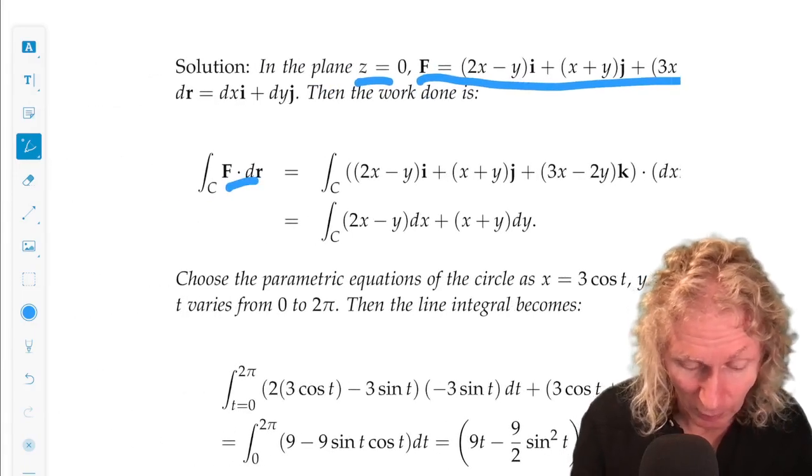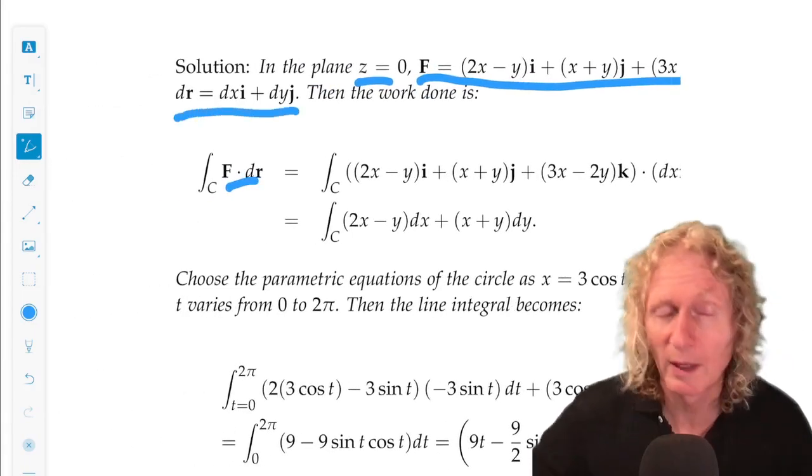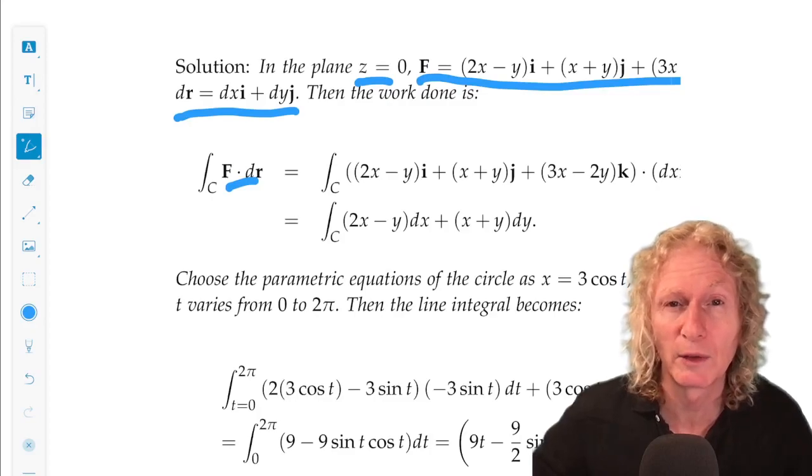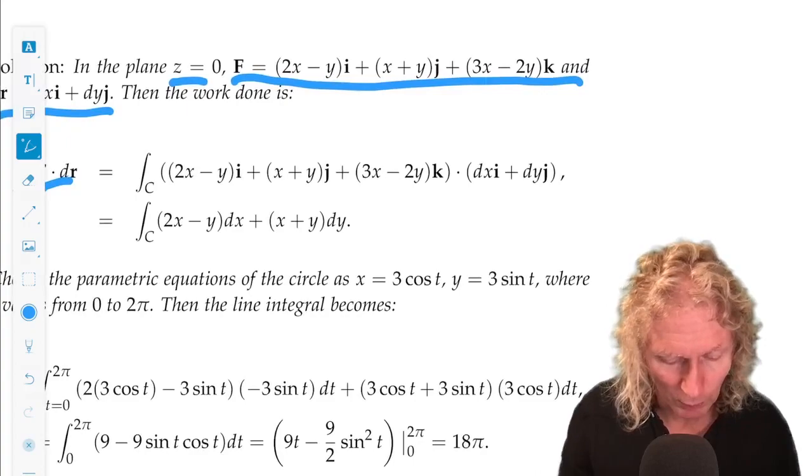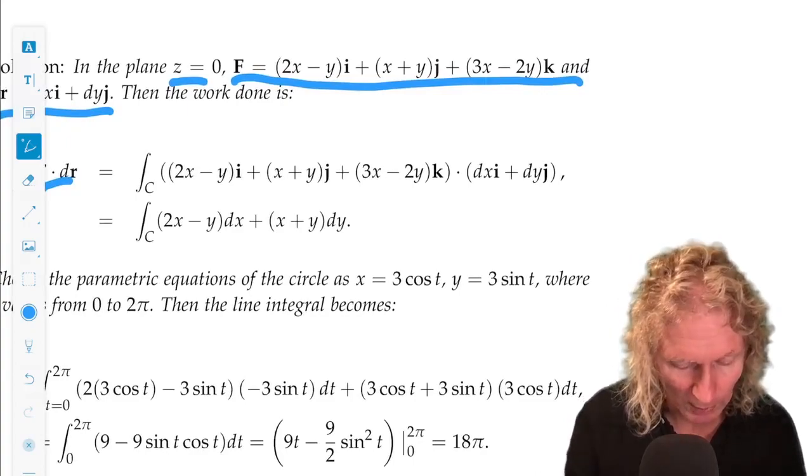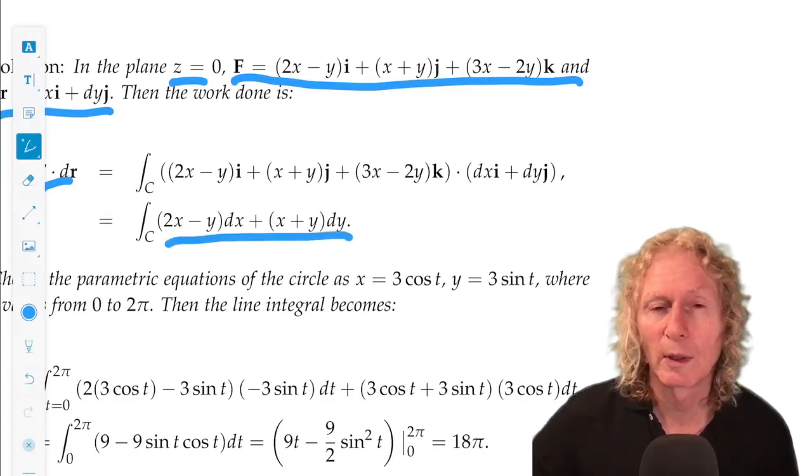So we compute f dot dr. dr is the displacement in the xy plane, so that would be just dxi plus dyj. We compute the dot product, and we get this.